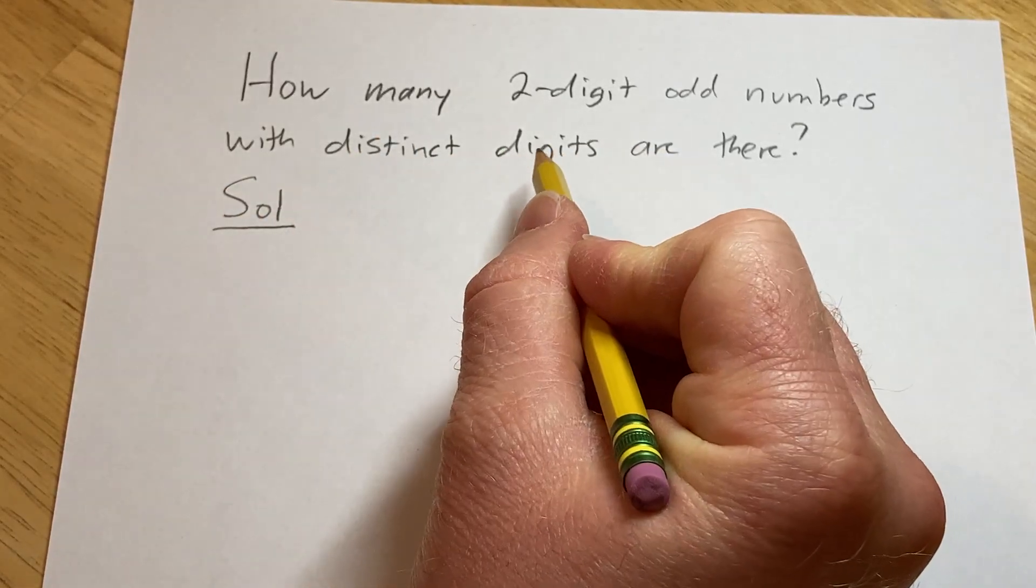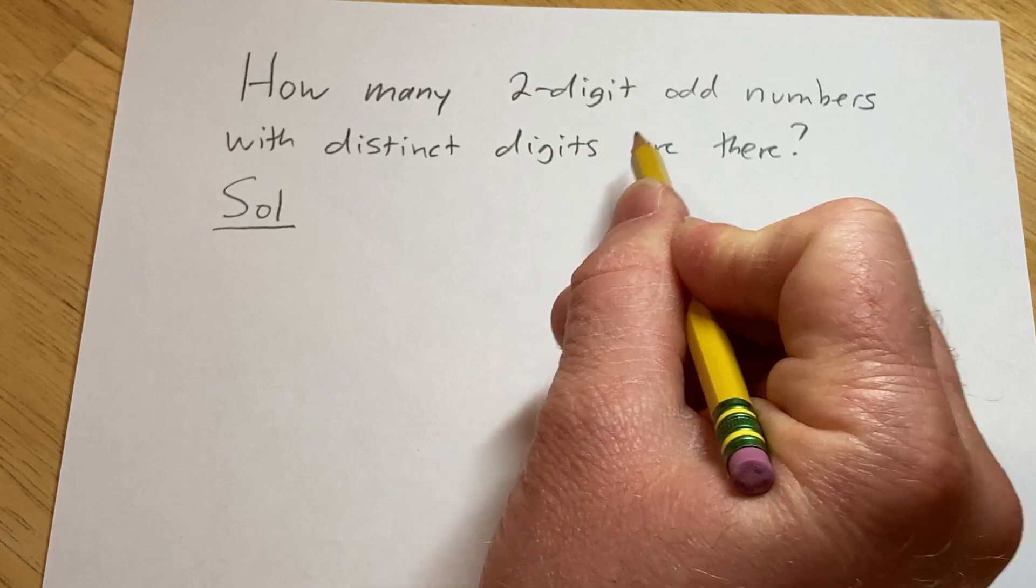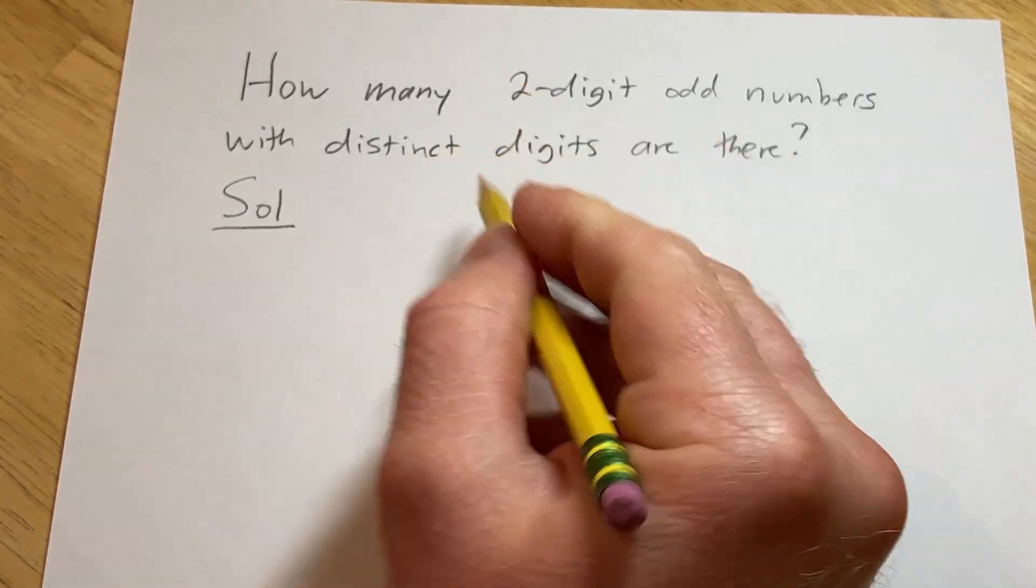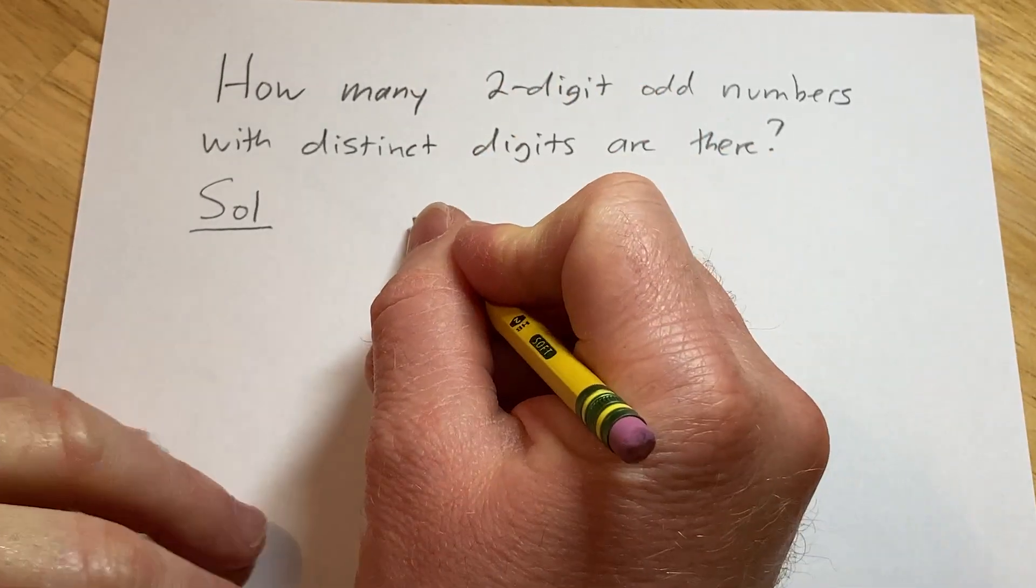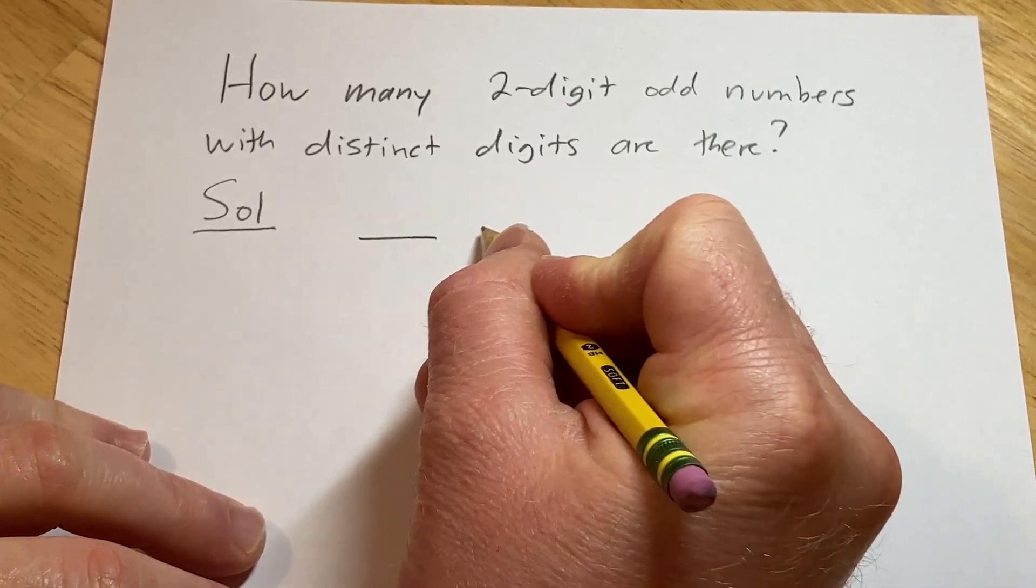So let's go ahead and work through it. First let's focus on how many two-digit odd numbers there are. So a two-digit number has two digits. One, two.